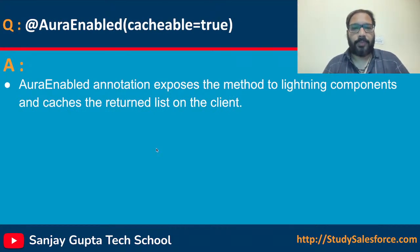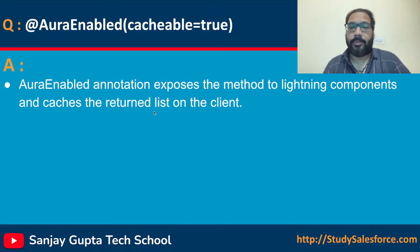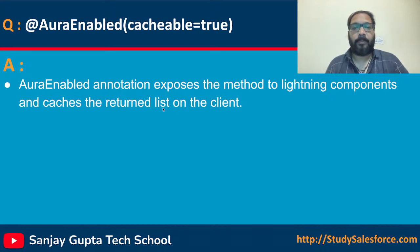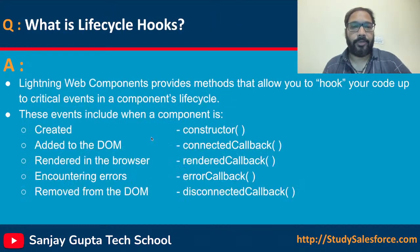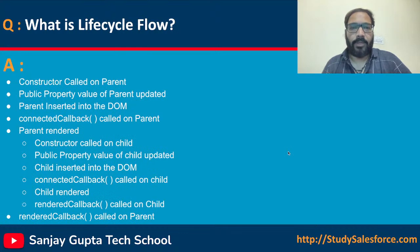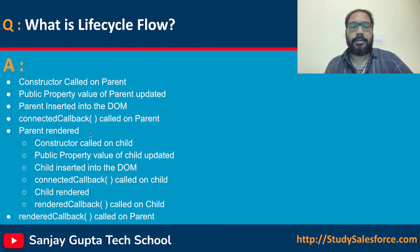Then @AuraEnabled — if you want to call any Apex class, the @AuraEnabled annotation exposes the method to the Lightning components and caches the returned list on the client. This is an important question asked in interviews. Then lifecycle hooks — you need to know the sequence: how they are called and what they mean. This is the lifecycle flow that you can remember, written keeping in mind the parent-child relationship between two components.